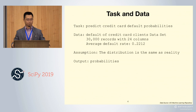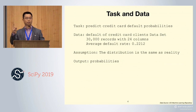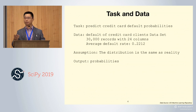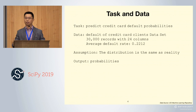Let's do a project together here. The task is to predict credit default probabilities. The data we have has 30,000 records with 24 columns — one target and 23 variables. The average default rate on this dataset is 0.2212. Let's pretend that this matches reality, although it's not true, otherwise the bank would have already gone bankrupt. This assumption is critical in probabilistic classification because if violated, your prediction will be biased, since your model is trained on biased data.